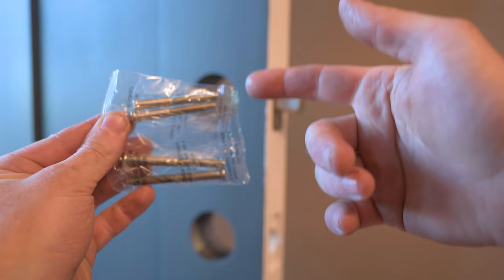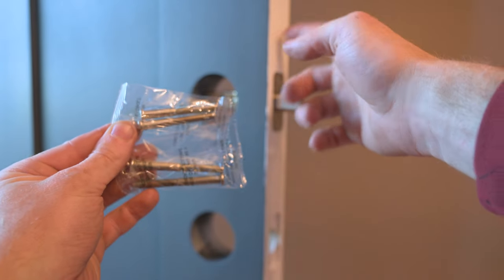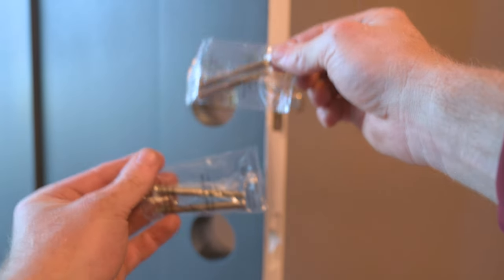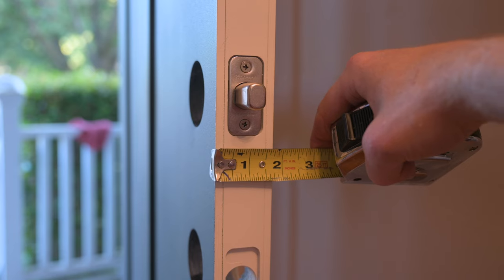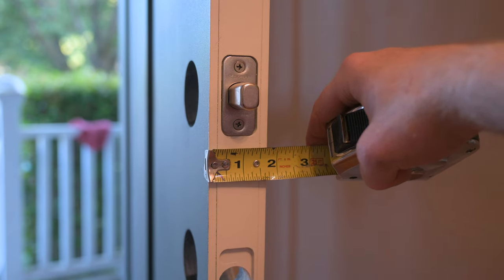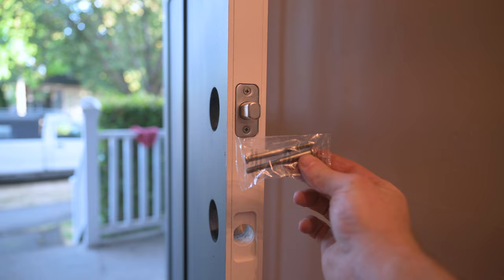So this kit comes with two sets of bolts, depending on how thick your door is. So just measure it and figure out if you're going to use the long or the short ones. This door is one and three quarters, which means I'll use the slightly longer ones.